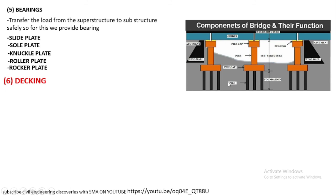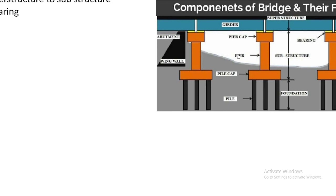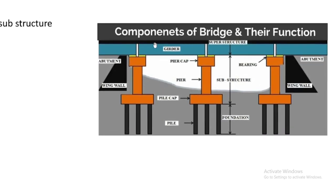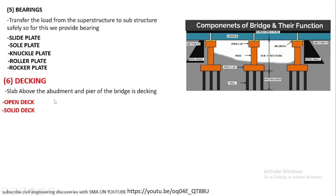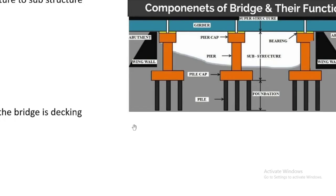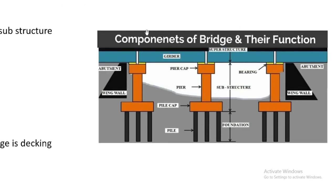Decking is the part of the bridge above the girder. Decking is basically the portion above the abutment and pier of the bridge. Decking is divided into open deck and solid deck. Open deck includes wooden floor, concrete floor, and buckle plate. When the load comes on the deck, it transfers to the girder, the girder transfers it to the bearing, the bearing transfers it to the pile cap and pier cap, and the pier cap transfers the load safely to the earth through the piles.